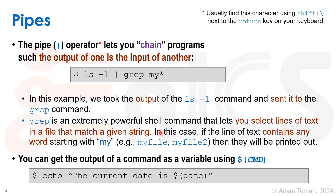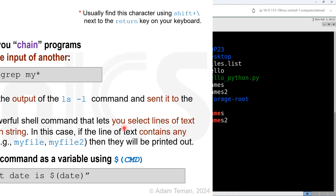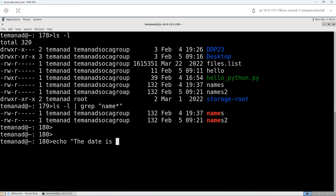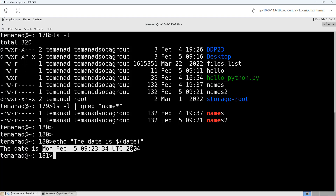Another thing we can do is command substitution — run a command inside the command line and use its output. For example, 'echo the current date is $(date)'. By putting dollar sign and parentheses around a command, it returns the output of that command and replaces it inline. In older systems like csh, backticks were used; in other shells, square brackets. In bash, we use the dollar-sign parentheses syntax. So 'echo the date is $(date)' prints the current date inline.